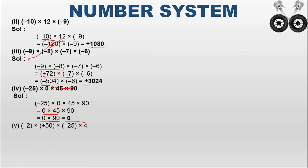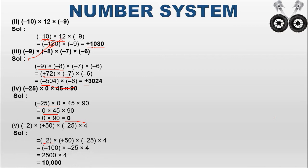Next: minus 2 into plus 50 into minus 25 into 4. First, minus 2 into 50: different signs, so negative 100. Then minus 100 into minus 25: same signs (both negative), so positive. 100 into 25 equals 2500. Then plus 2500 into 4: both positive, so the answer is positive. 2500 into 4 equals 10,000.